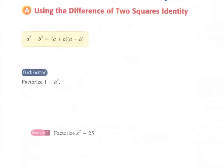We have another quite important factorization identity in form two, and you should remember the name of this identity. It's called the difference of two squares: a squared minus b squared equals (a plus b)(a minus b). You can also write this as (a minus b)(a plus b) — they are just the same.